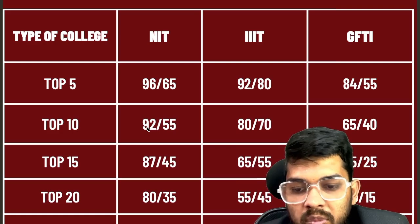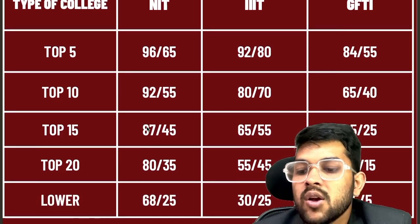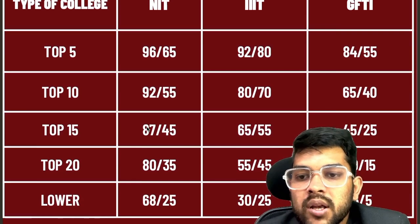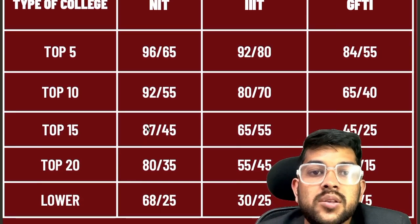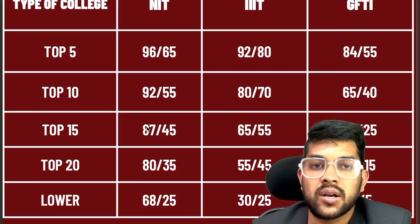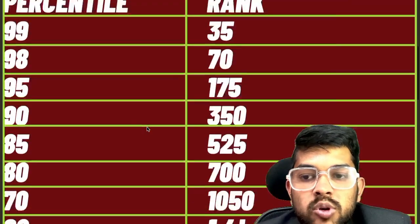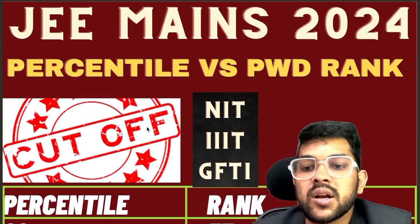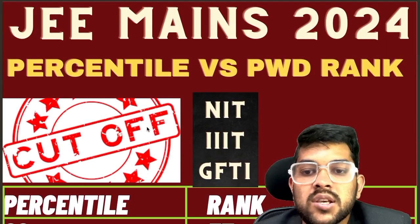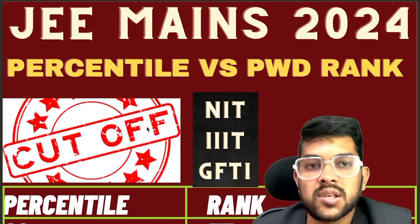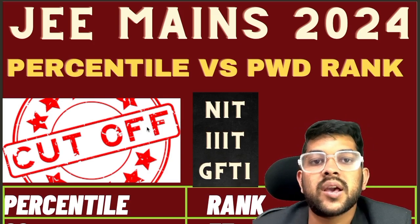For top 20 NIT: 80 and 35 percentile. For Triple IT: 55 and 45. For GFTI: 30 and 15. For lower-ranked NITs: 68 and 25. For Triple IT: 30 and 25. For GFTI: 15 and even 5 percentile — at even 5 percentile you can get a college. This is the benefit of the PWD category. This was the complete information regarding JEE 2024 for PWD students. Please subscribe to my Hindi channel, Admission Academy. Thank you.